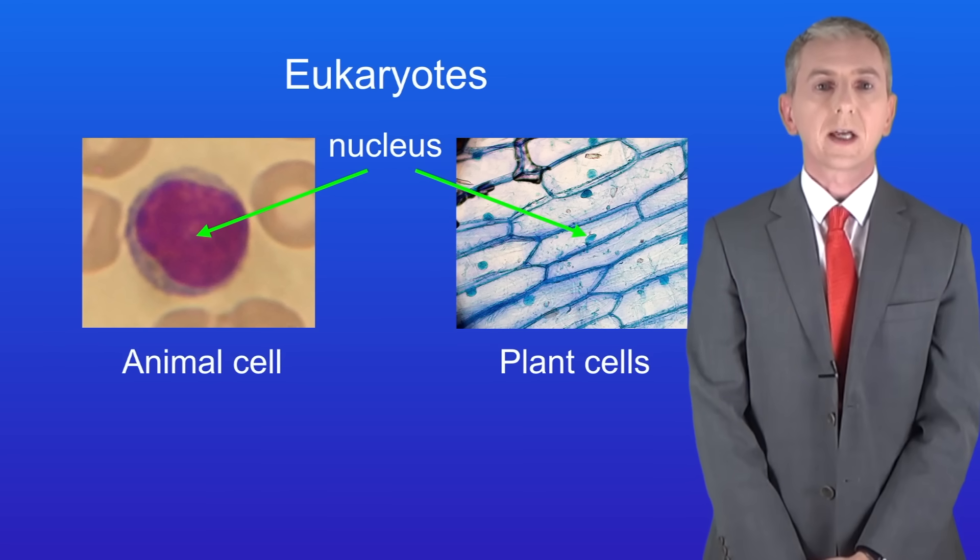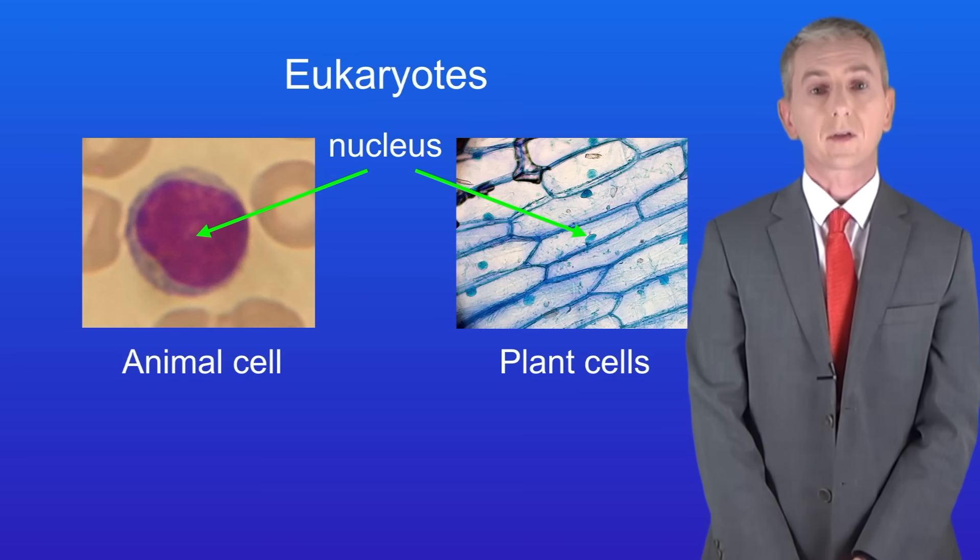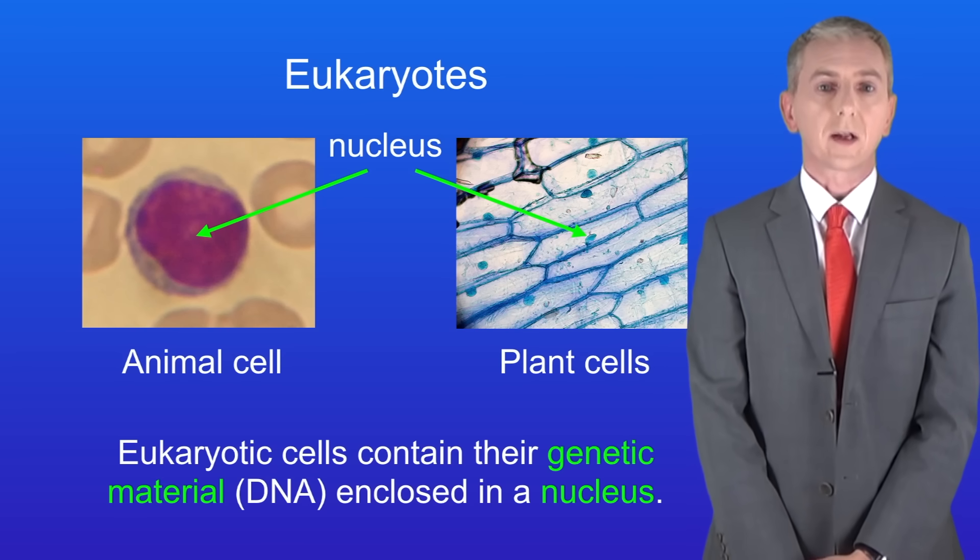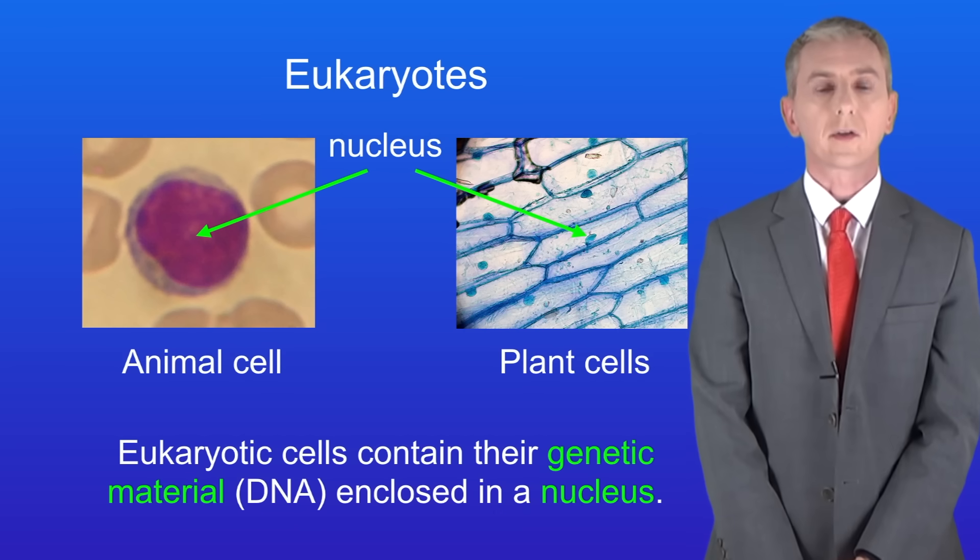The nucleus contains the genetic material of these cells, in other words, the DNA. This brings us to the definition of eukaryotic cells: eukaryotic cells contain their genetic material enclosed in a nucleus, and it's really important that you learn that definition.